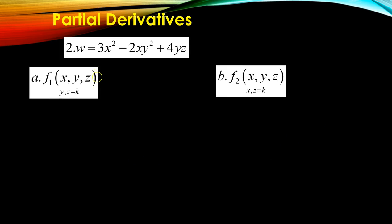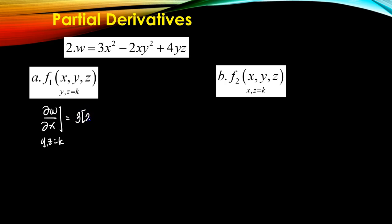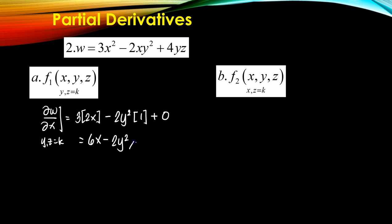Let's go to another example, where w is a function of x, y, and z. Solving for the partial of w with respect to x, y and z are taken as constants. Since y and z are constants, the result is 3 times 2x from the first term. 2y² is a constant and the derivative of x with respect to x is 1, and the term with only y and z becomes 0. So the answer is 6x − 2y².